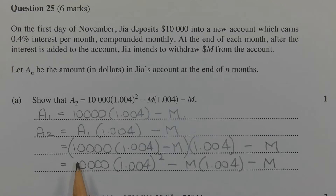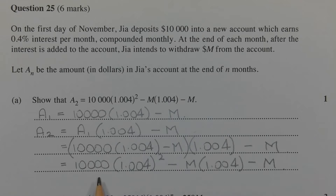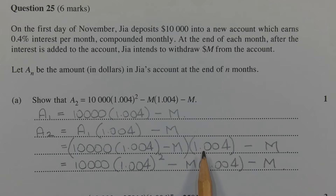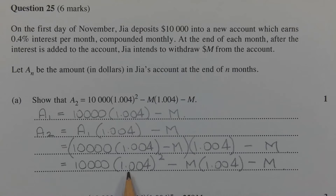Expanding the brackets, we get 10,000 times 1.004 times 1.004, which gives us 10,000 times 1.004 squared, minus M times 1.004, and then take away M. So A2 is equal to 10,000 times 1.004 squared minus M times 1.004 minus M.